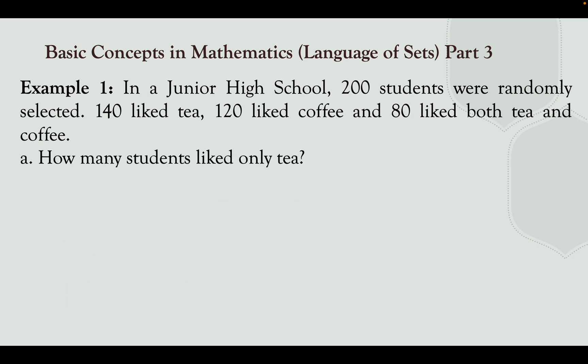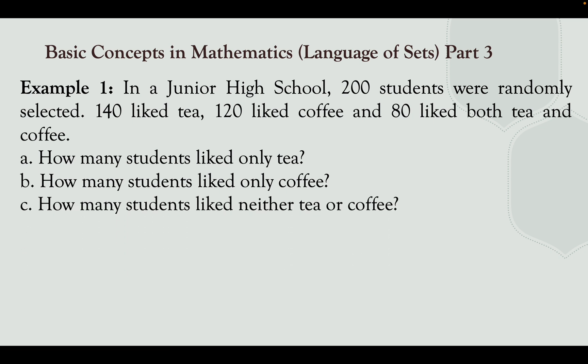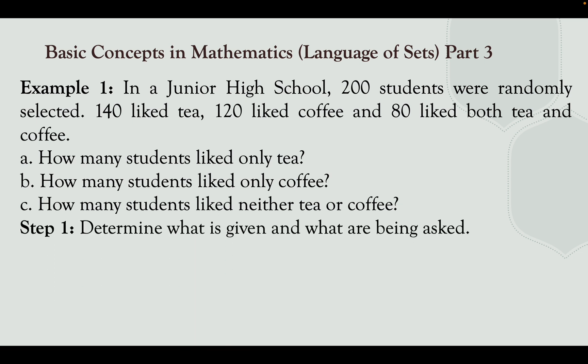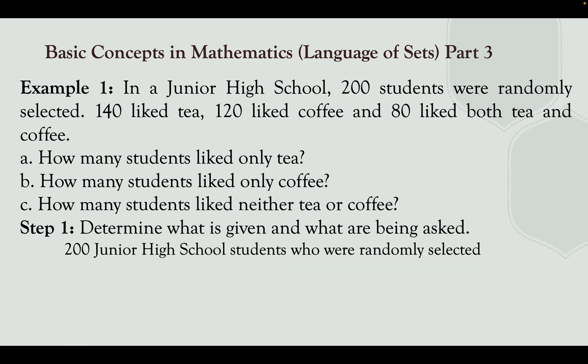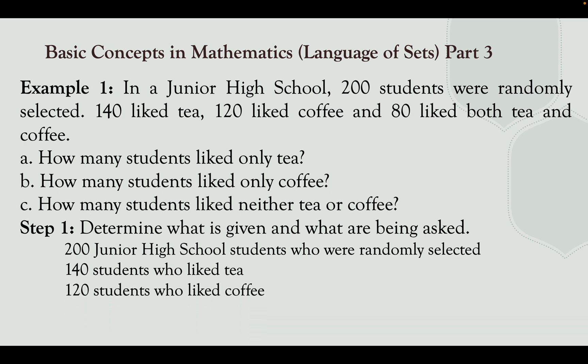The questions are: How many students like only tea? Second, how many students like only coffee? Letter C, how many students like neither tea nor coffee? So step number one, we need to determine what is given and what is being asked. The given are 200 junior high school students who were randomly selected, 140 who liked tea, 120 who liked coffee, and 80 students who liked both tea and coffee.